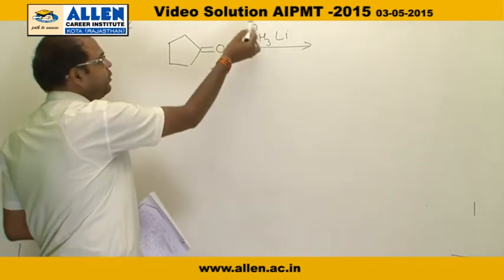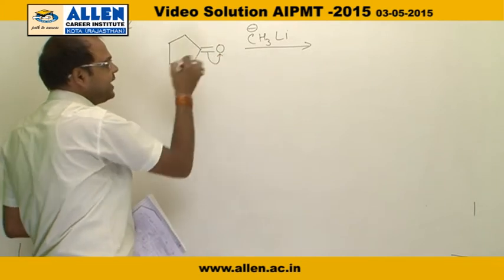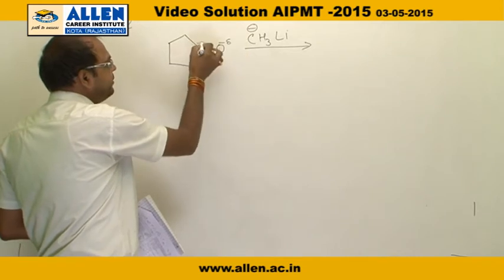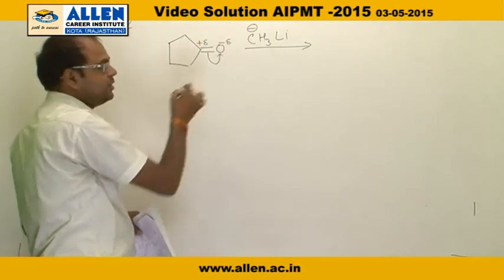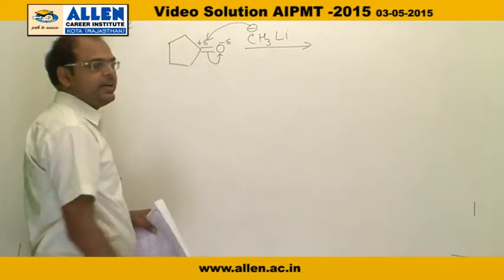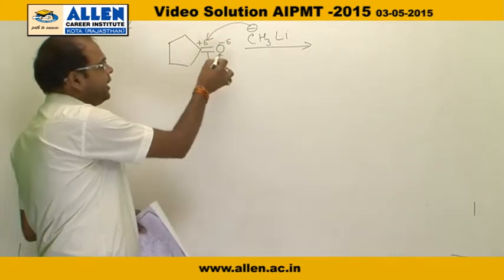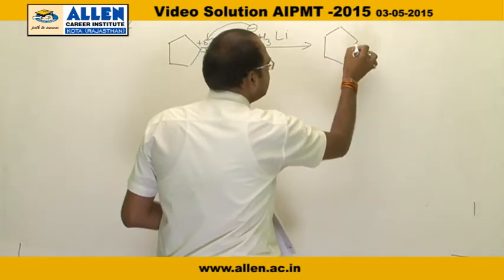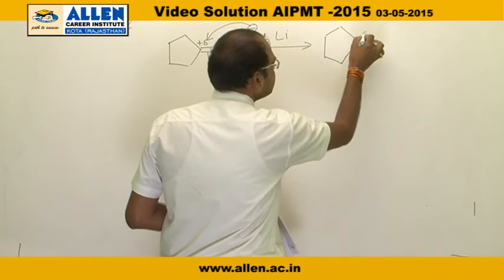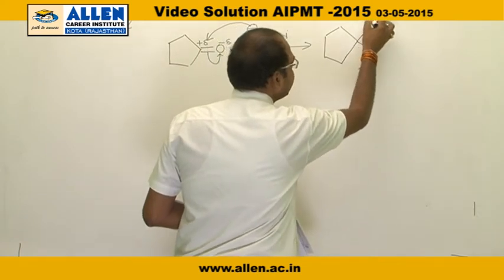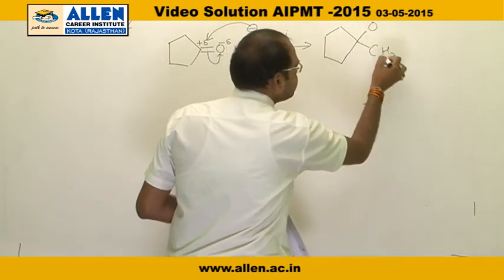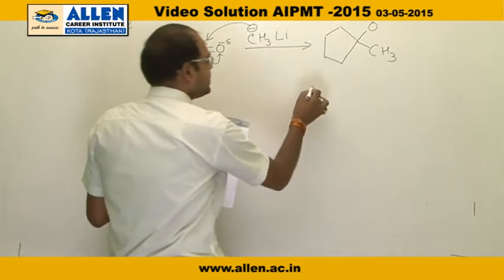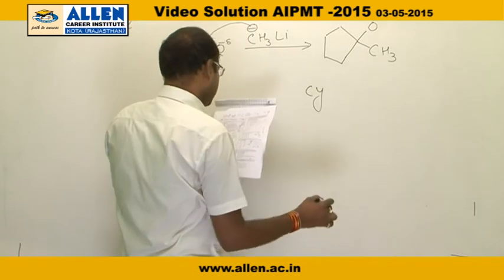The first attack is by R⁻ on the carbonyl group, which is polarized — oxygen is more electronegative so it gets a δ⁻ charge and carbon gets a δ⁺ charge. So the nucleophile CH₃⁻ attacks the carbonyl carbon, resulting in the formation of an anion, which is called the cyclopentanone alkoxide anion.